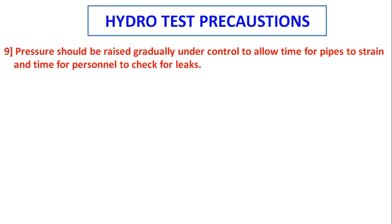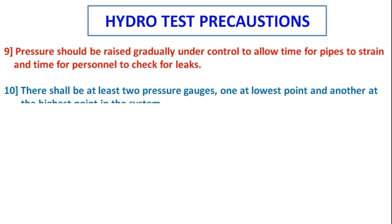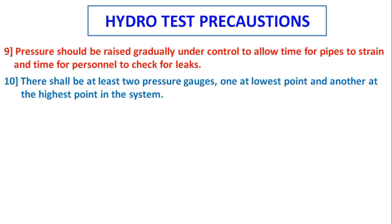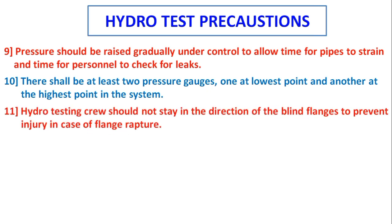Pressure should be raised gradually and under control to allow time for pipes to strain and for personnel to check for leaks. There shall be at least two pressure gauges — one at the lowest point and the other at the highest point in the system. Hydro testing crew should not stand in the direction of blind flanges to prevent injuries in case of flange rupture.